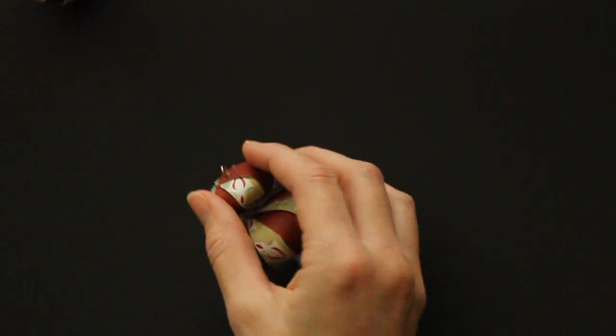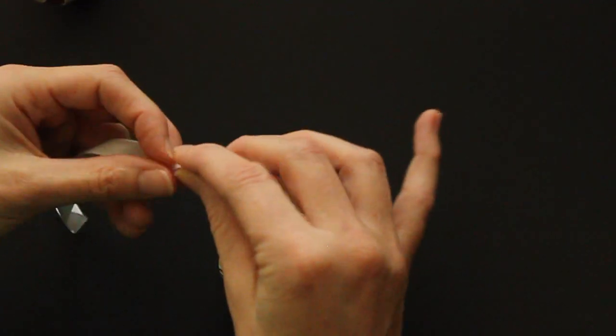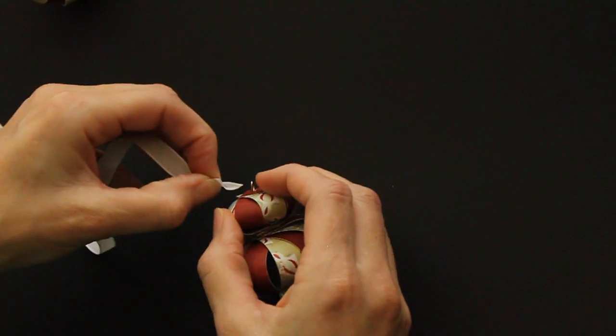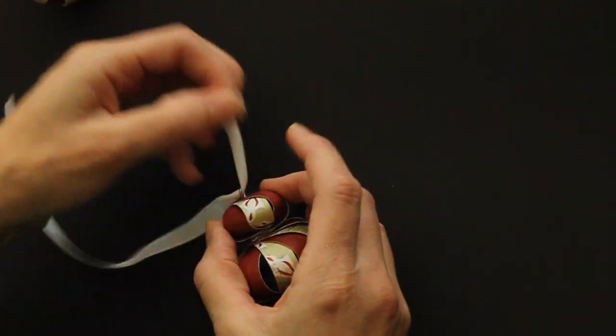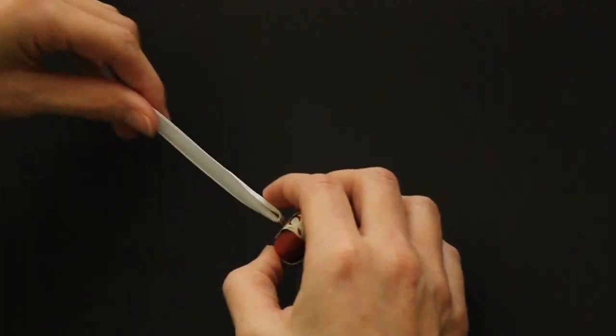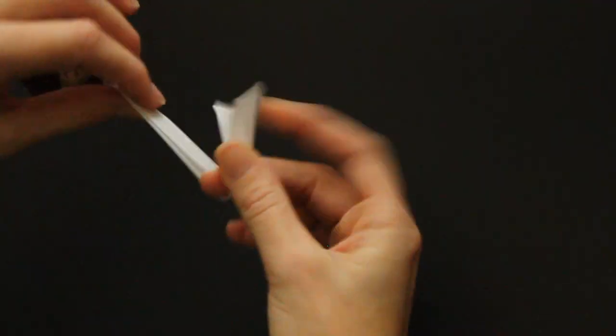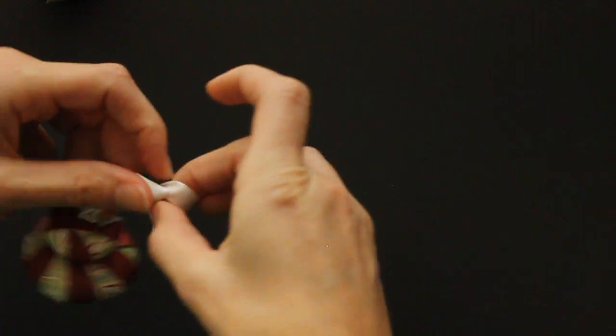Now just add some ribbon. I'm using white taffeta ribbon from Stampin' Up! And just tie it so you have your hanger. Tie a knot on the end.